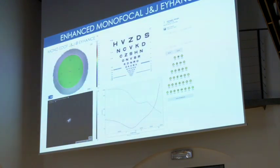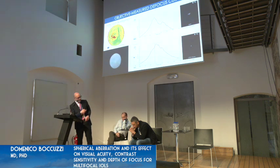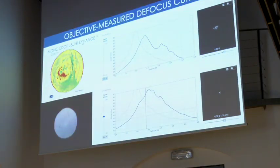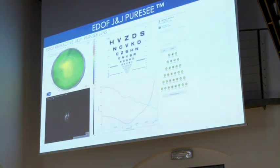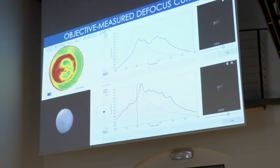The J&J Eyhance monofocal lens shows its refractive error profile and what happens when we move from 2 mm to 2.5 mm pupil analysis — a different defocus curve shape with an enhancement in myopic shift. The J&J Synergy lens similarly shows that when we reduce the pupil and reduce the area of analysis, we have an improvement of the defocus curve for near vision.